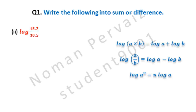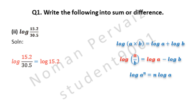Next, we are going to solve part 2 of question number 1, exercise 3.3. Write the following into sum or difference. Part 2 is log(15.2 / 30.5). We are taking the question as it is. Second property will be applied: log(15.2 / 30.5) = log 15.2 − log 30.5, where the division is converted to minus. You can also see the details on the right side. Hence, this is our answer.